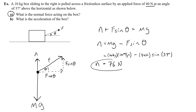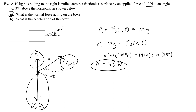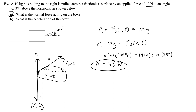What about the acceleration of the box? Are there any forces that aren't balanced? F sine theta and the normal force are balanced by the weight. But what about F cosine theta? There's nothing acting to the left — there's no friction to balance this force. That means it's unbalanced and we'll have an acceleration in that direction, because F cosine theta is the net force.